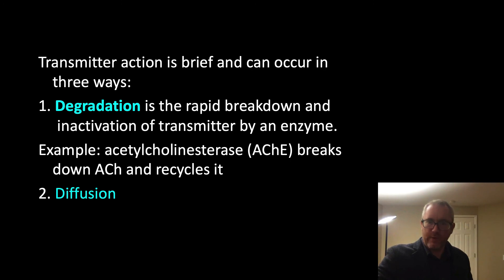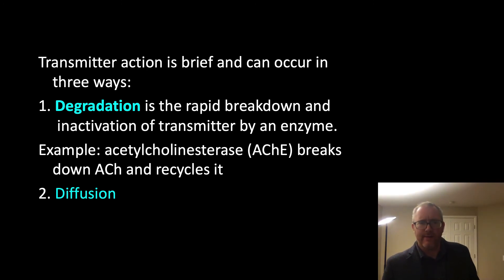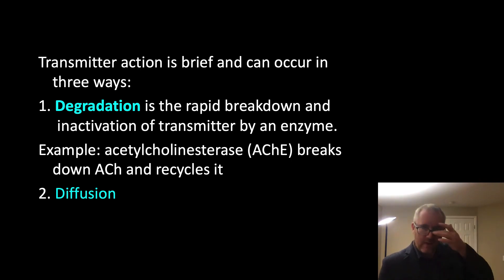Neurotransmitter action is typically brief and can be deactivated in one of three ways. One is degradation, which occurs by enzymes — for dopamine, one example would be COMT. Another example is acetylcholinesterase, which breaks down acetylcholine in the neuromuscular junction and then recycles it. Nerve agents like mustard gas and sarin are acetylcholinesterase inhibitors that prevent this from occurring, leading to excess acetylcholine in the neuromuscular junction and causing the resulting effects seen in nerve agent exposure.